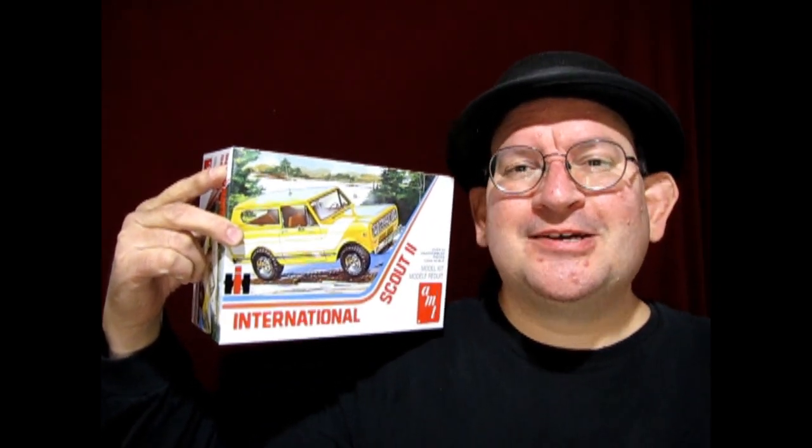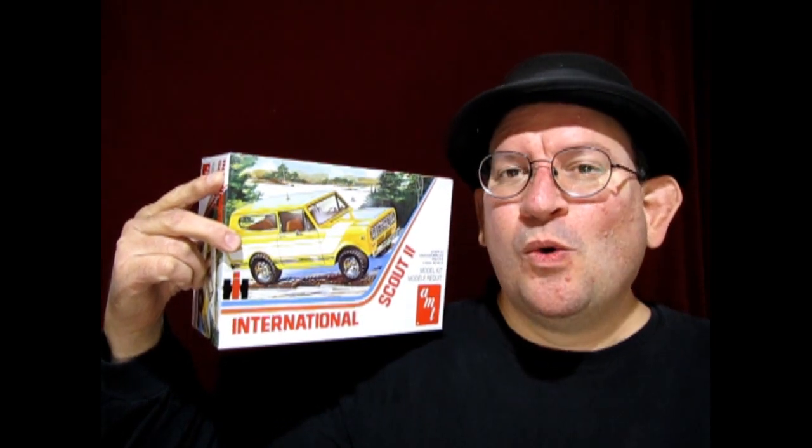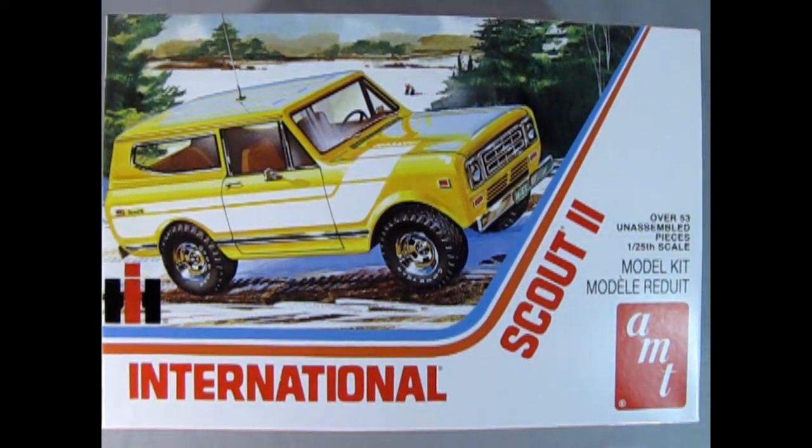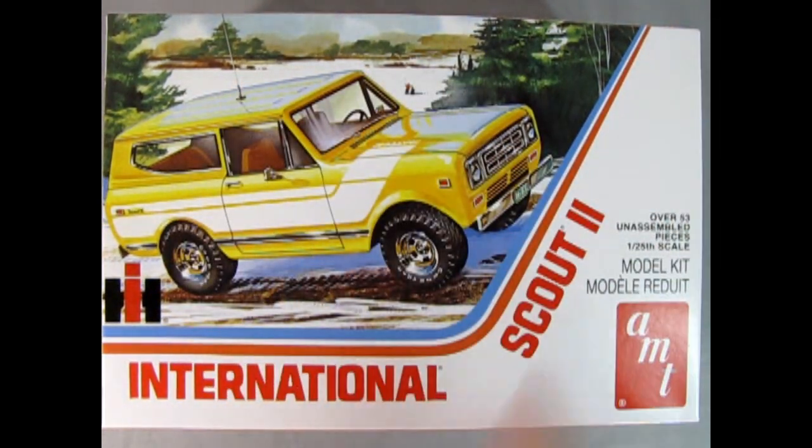So without any further delay, let's go down to the bench and see what's in the box. It's summertime. It's 1976 and you just can't wait to drive your International Scout 2 right into a Bob Ross painting.